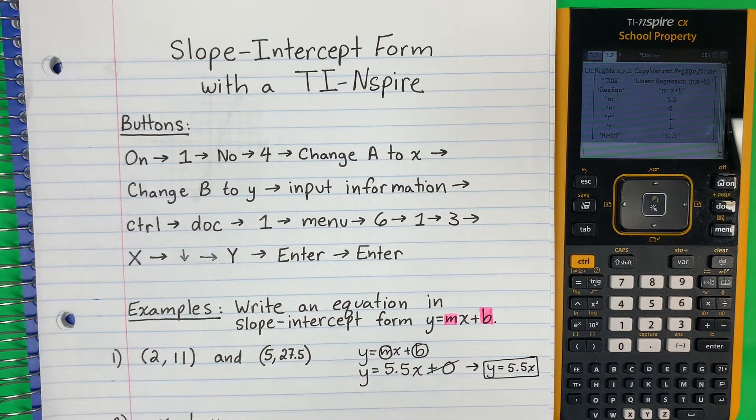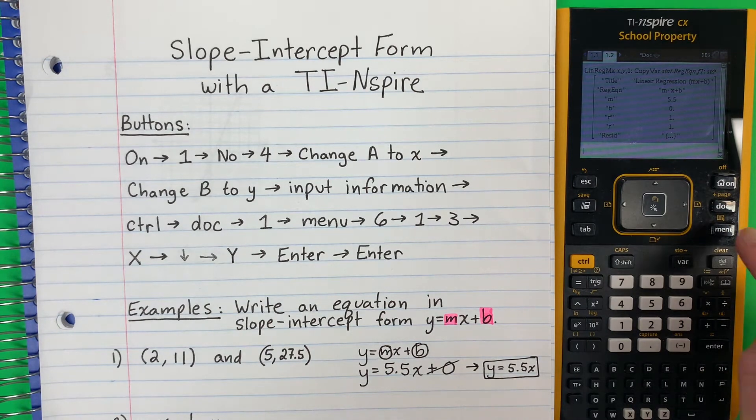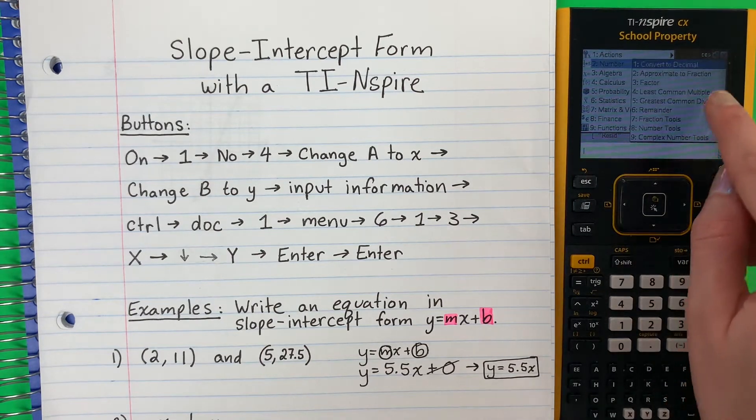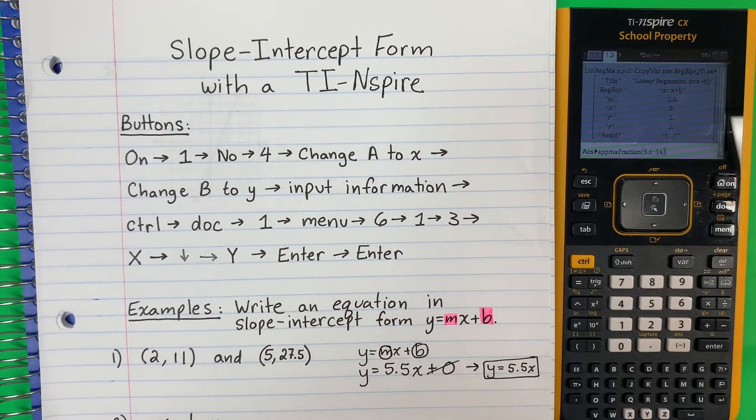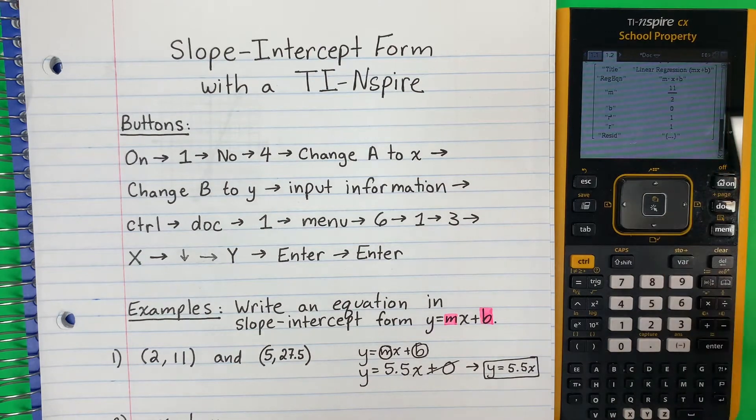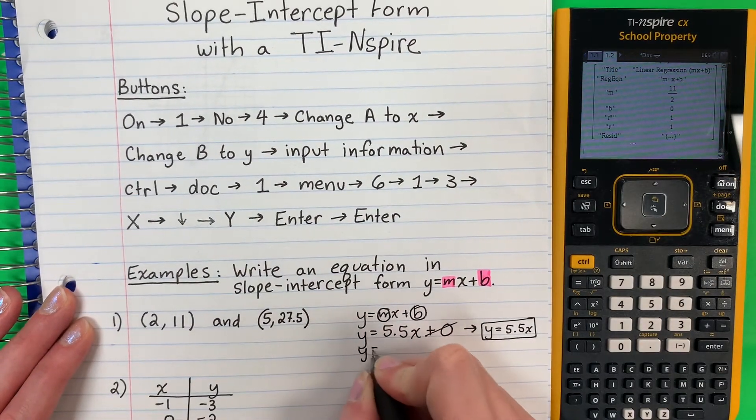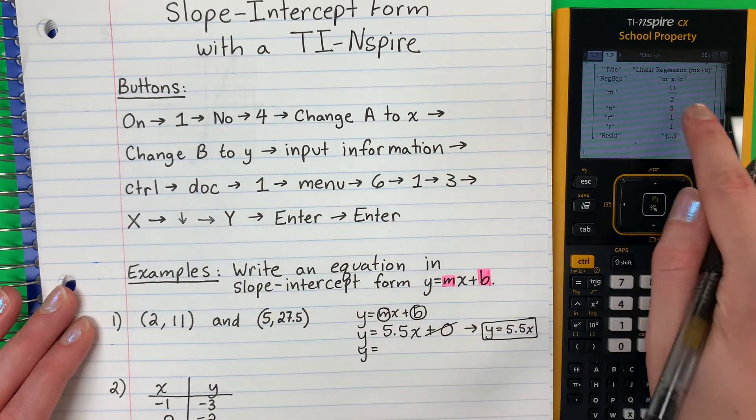Now, if you want a fraction, si quiero un fracción, then here's what I'm going to do. Este es que voy a hacer. So I'm going to do menu, 2 for number. Fraction is 2. Enter. Now, I have it in fraction. So again, I could do y equals m is 11 halves.